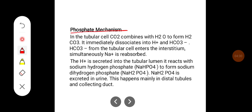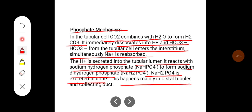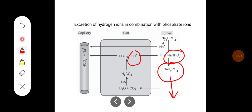The phosphate mechanism: in the tubular cell, carbon dioxide combines with H2O to form carbonic acid (H2CO3), which immediately dissociates into H+ ions and bicarbonate. Bicarbonate from the tubular cell enters the interstitium while sodium is simultaneously reabsorbed. The H+ secreted into the tubular lumen reacts with sodium hydrogen phosphate (Na2HPO4) to form sodium dihydrogen phosphate (NaH2PO4), which is excreted in the urine. This happens mainly in the distal tubules and collecting duct, and thus the H+ ion is removed.